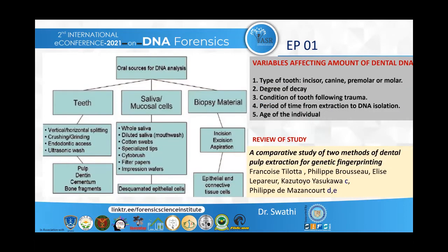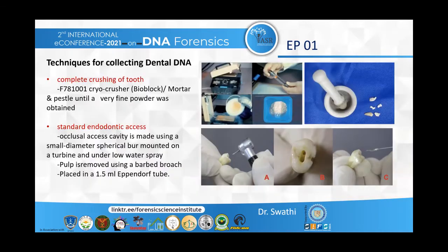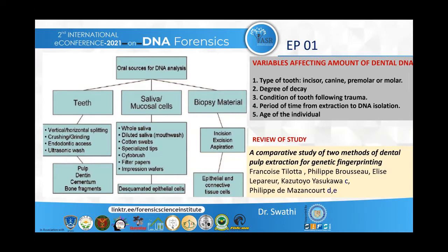The various oral sources for DNA analysis are teeth, saliva, and biopsy material. We are going to be focusing on teeth. The various sources from teeth are pulp, dentin, cementum, and bone fragments. Enamel is acellular and thus does not contain any significant amount of DNA for analysis, but dentin, in addition to the pulp, contains cells and vessels, which are in turn protected by the cementum and enamel, thus serving as one of the best sources of DNA to aid in identification. The various methods by which dental DNA can be obtained are vertical or horizontal splitting, crushing and grinding of teeth, endodontic access, and ultrasonic wash.